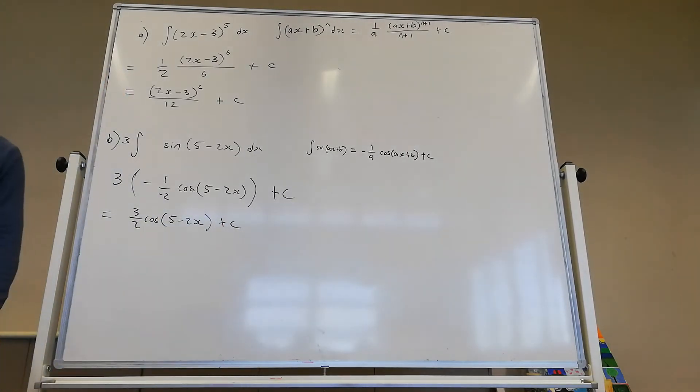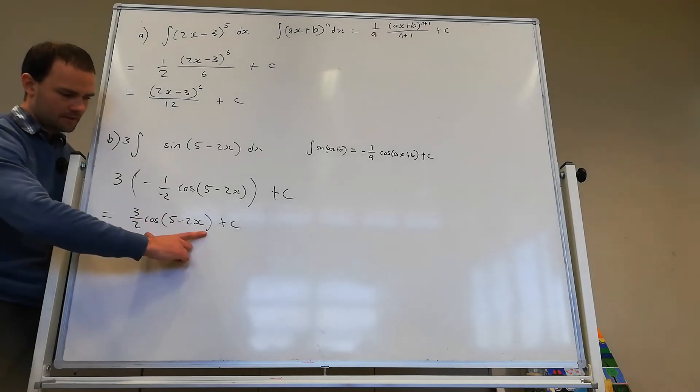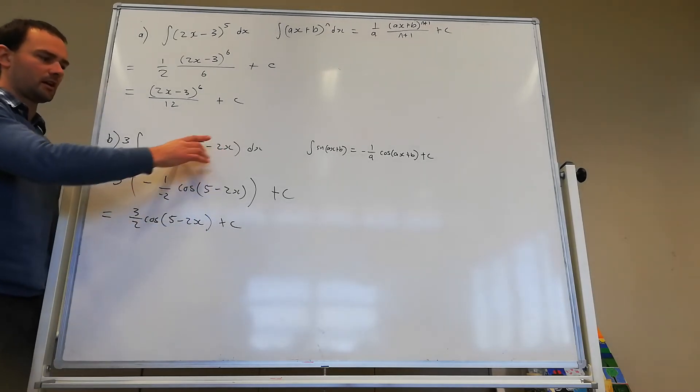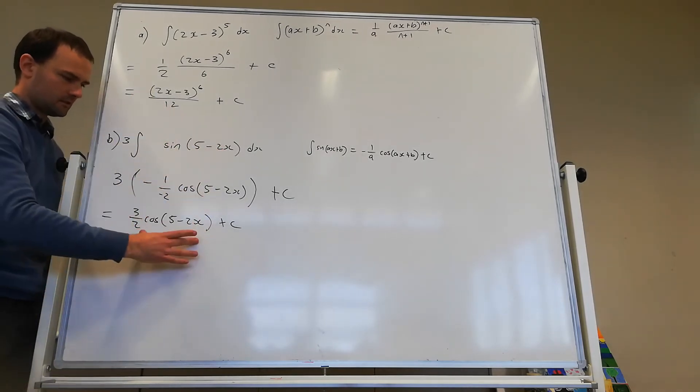Okay, and again, one foolproof way that you can check if you've got the right answer is, if we derive this, this is what we're going to get. If we integrate this, this is what we're going to get.